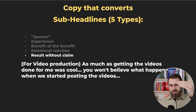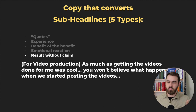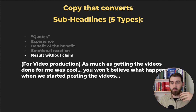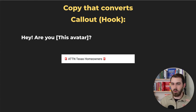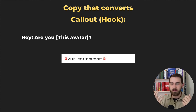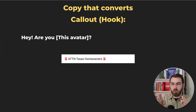Sub-headlines go under your headlines. There are five types. For video production: 'You won't believe what happens when we started posting the videos' — that's a result without a claim. Another type calls out your avatar: 'If you make videos, you know every video needs a hook.' You can also call out a location: 'Attention, Texas homeowners' — that's calling out your target audience in your marketing.